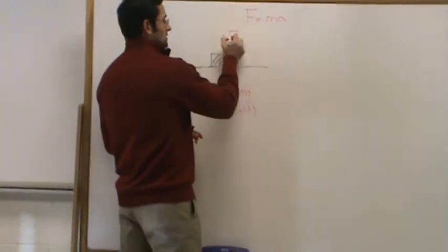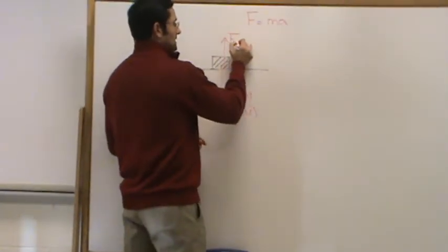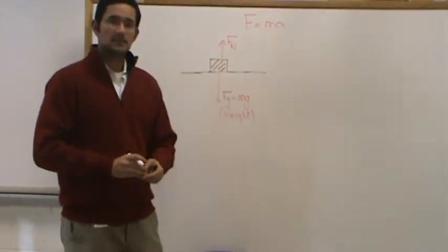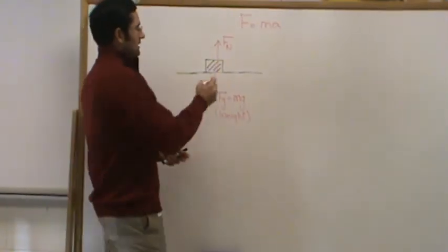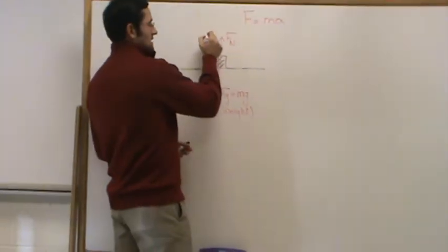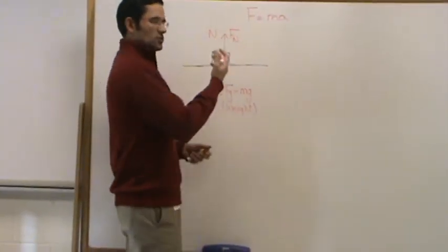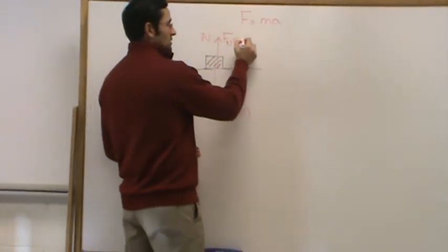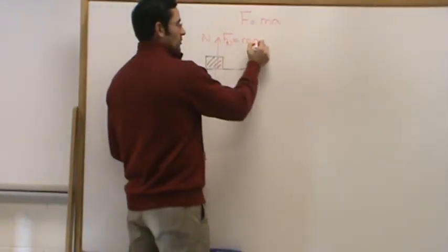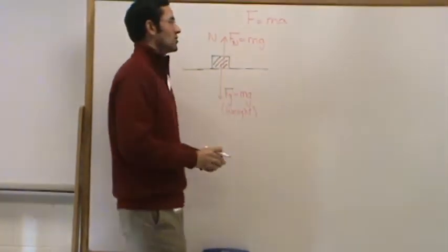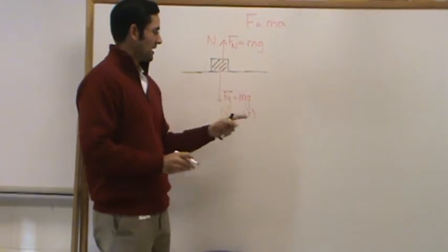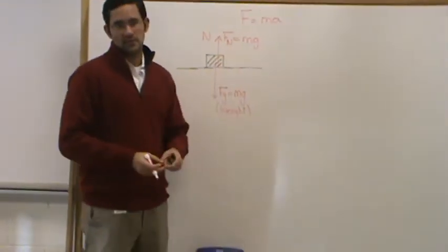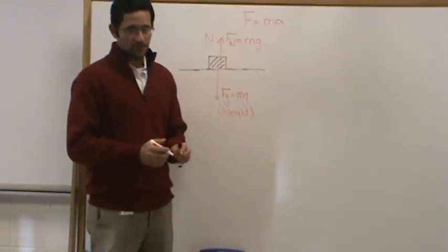The normal force is labeled as F subscript capital N; some teachers label it as just capital N, so you should know both. In this case, these two forces are equal to each other — so if the force of gravity is 1000 Newtons, the normal force is 1000 Newtons.